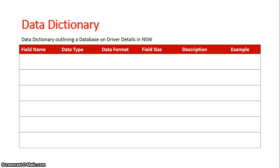In this database we're going to look at driver details for drivers in New South Wales. Our fields might be the license ID, surname, first name, address, phone number, and date of birth.